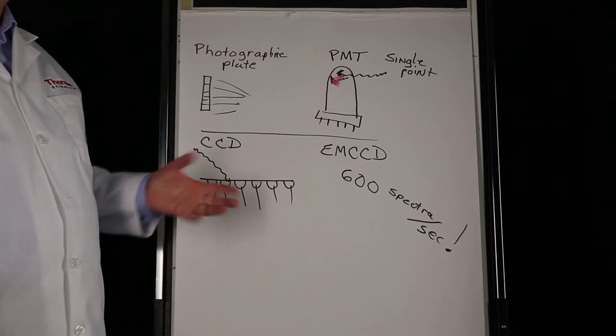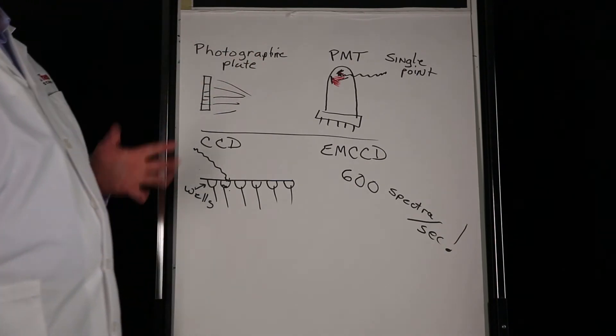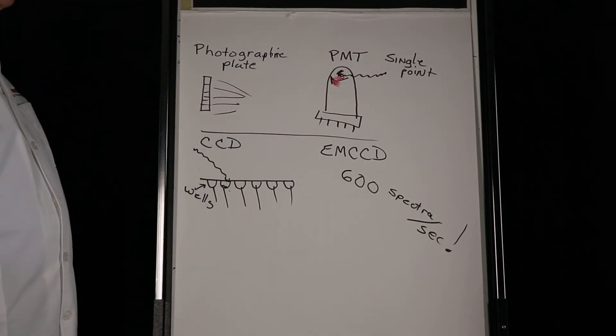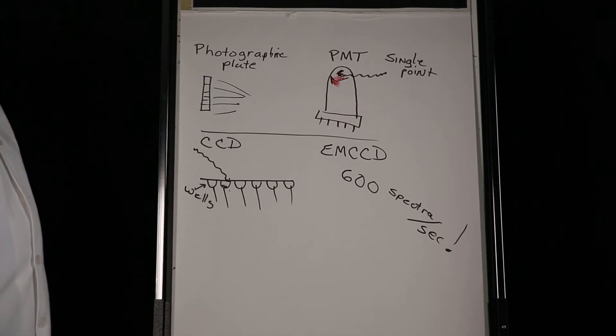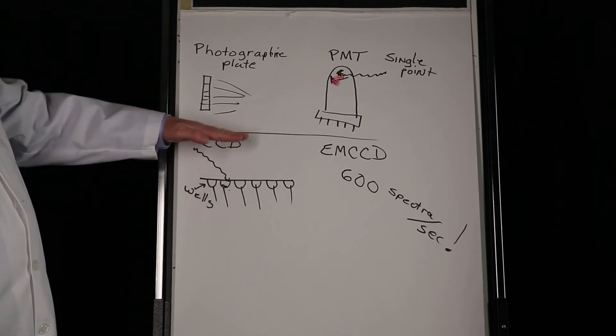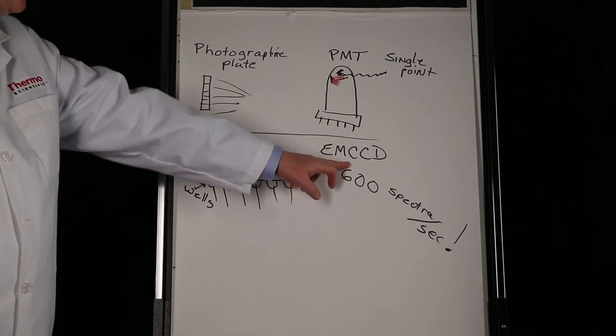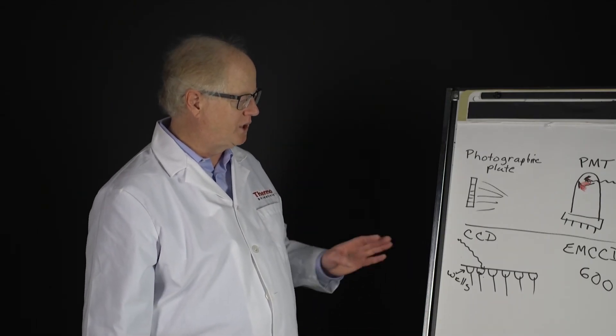So these are the four different kinds of detectors that have been used. As I said, the top two are mostly historical. There are still good systems built using photomultiplier tubes and there's still research going on into the improvement of photomultiplier tubes, but the majority of the interest now is into the multi-channel systems, the CCD and the EMCCD.